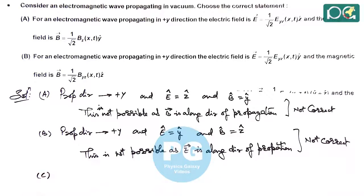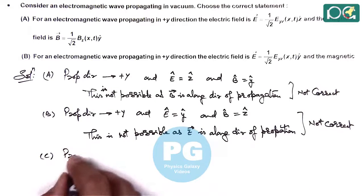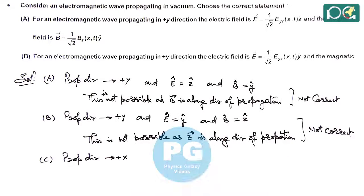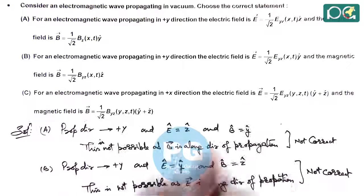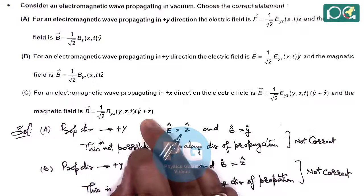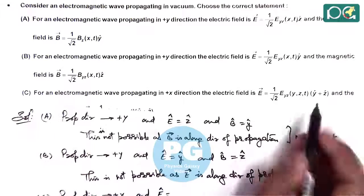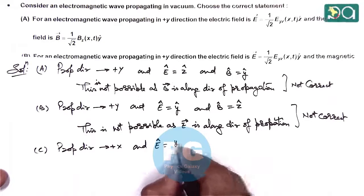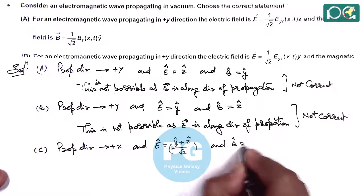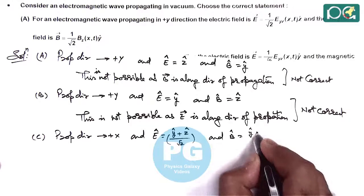If we talk about option C, for an electromagnetic wave propagating in the plus x direction, the propagation direction is plus x. That means the electric and magnetic fields must be in the y-z plane, which is perpendicular to x. Here E vector has a unit vector along the y-z plane and B vector also has a unit vector in the y-z plane. So E-cap is (y-cap + z-cap) / √2, and B-cap is also (y-cap + z-cap) / √2.